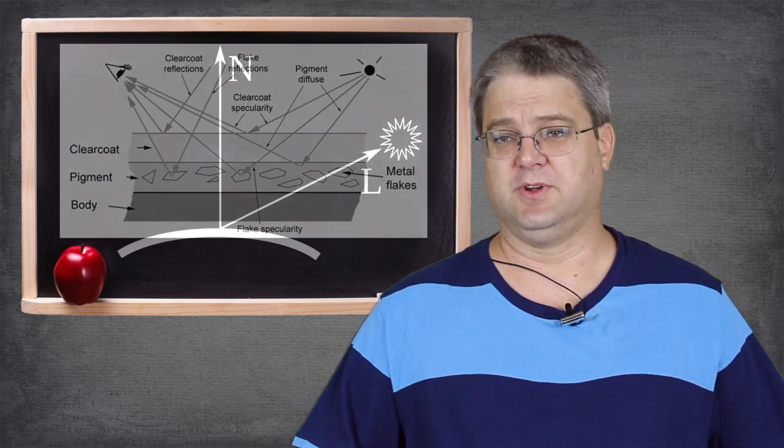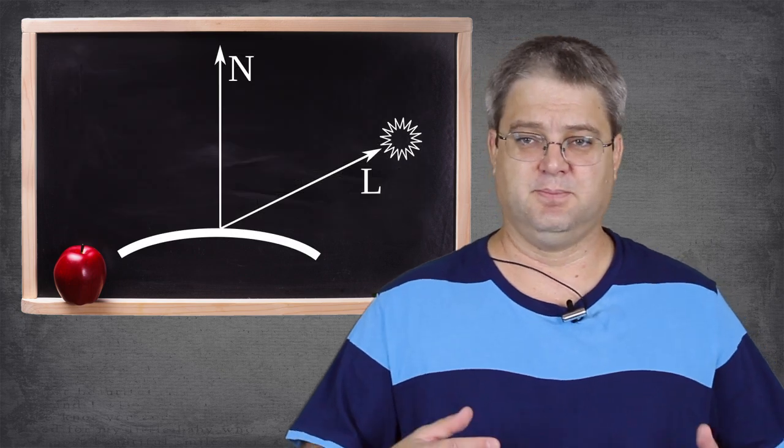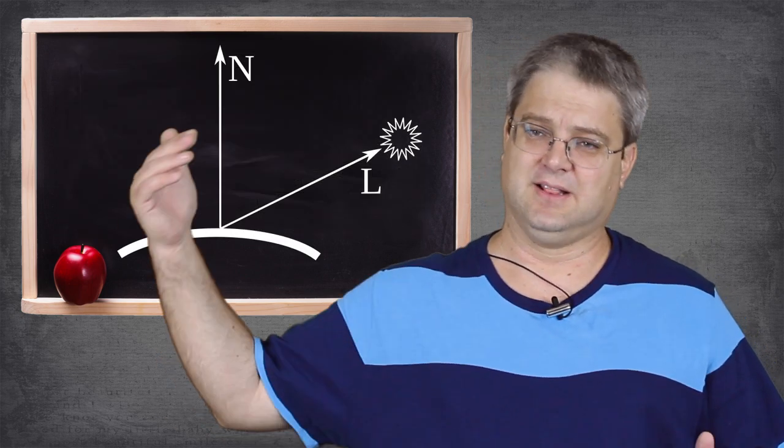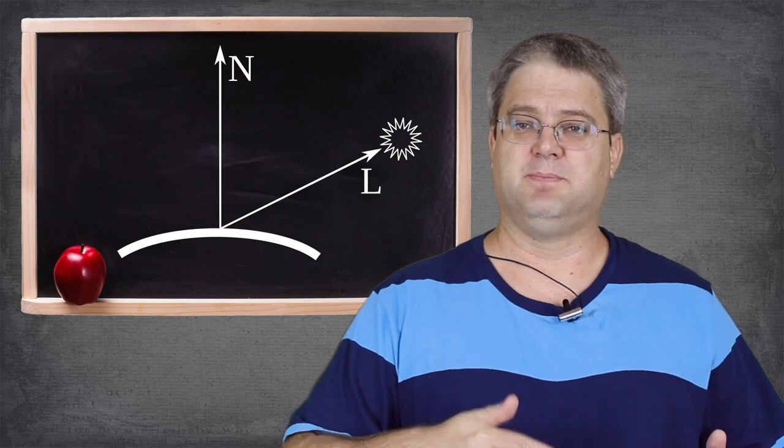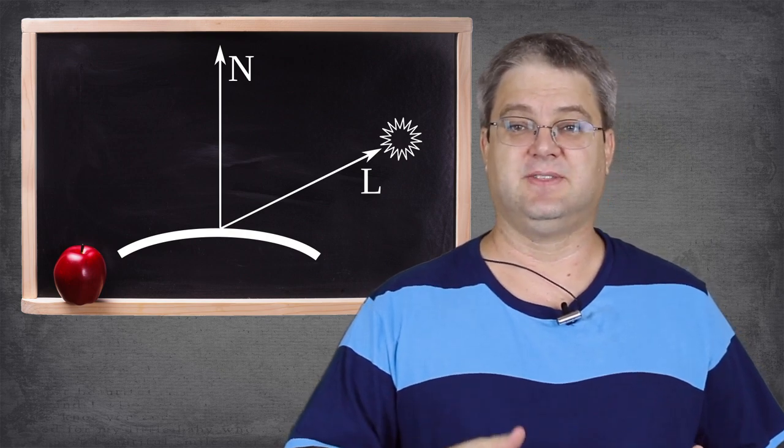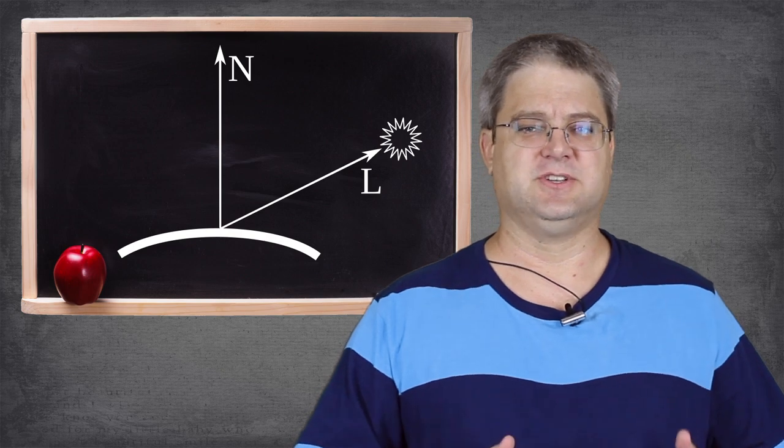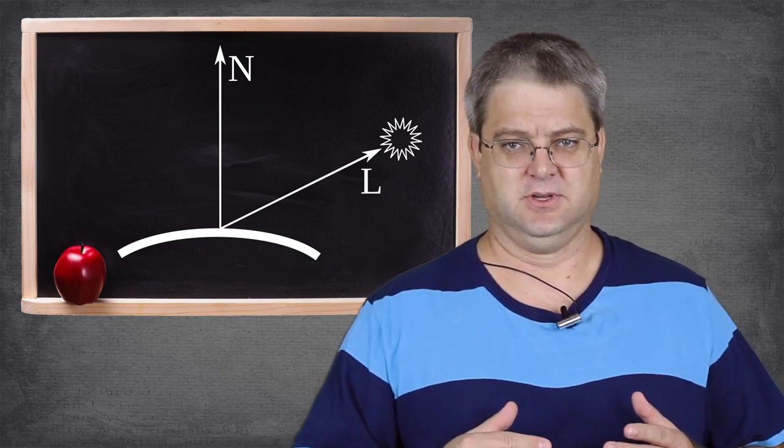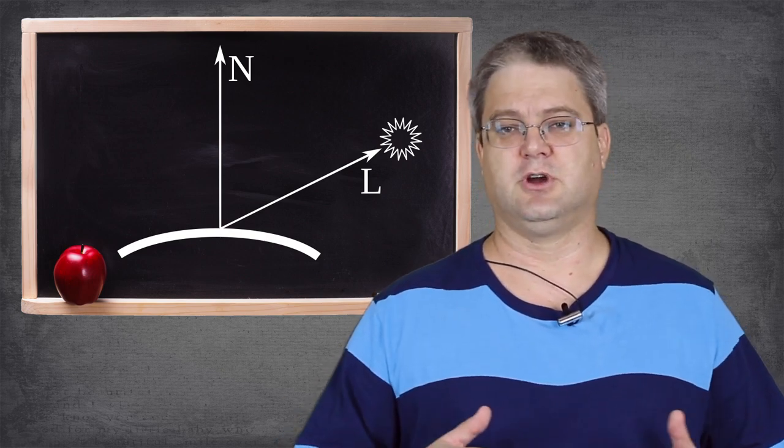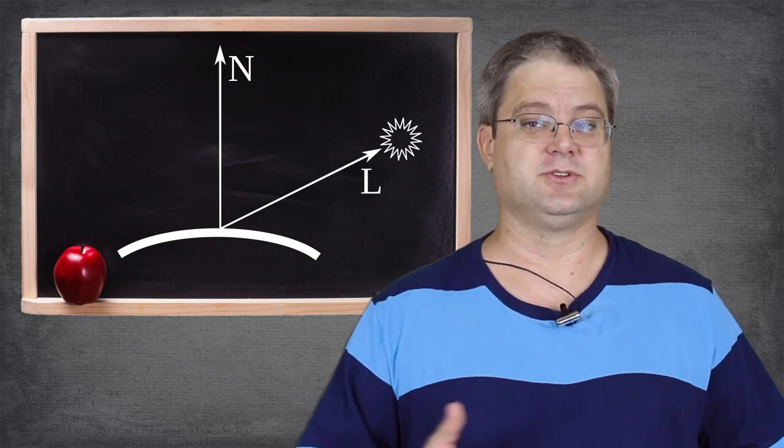When you have a piece of geometry and a light source, the computer projects a ray from that light to the surface and compares the angle of the light ray to that of the normal of the surface. That angle is known as the dot product. The computer uses the dot product to determine how much light, if at all, the surface gets.